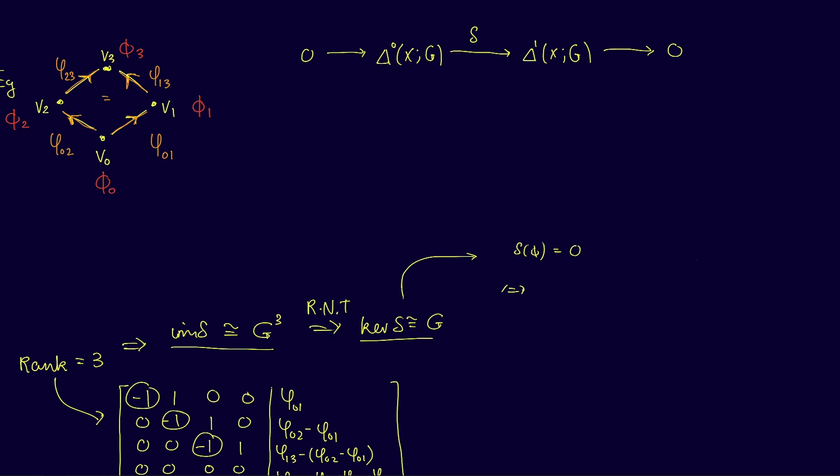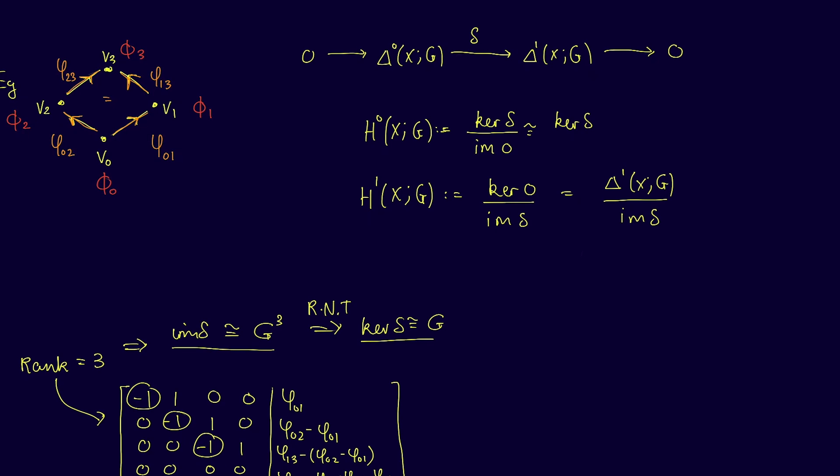Suppose the identity element in G is written zero. Then the equation δφ = 0 gives the equations φ₁ = φ₀, φ₂ = φ₀, and so on. In other words, anything in the kernel must take the same value in G on all of the vertices. This means that any φ in the kernel consists of a choice of single group element for all the vertices of X. Thus we see that the zeroth cohomology of X with coefficients in G is isomorphic to G, and the first cohomology of X with coefficients in G is isomorphic to G as well.